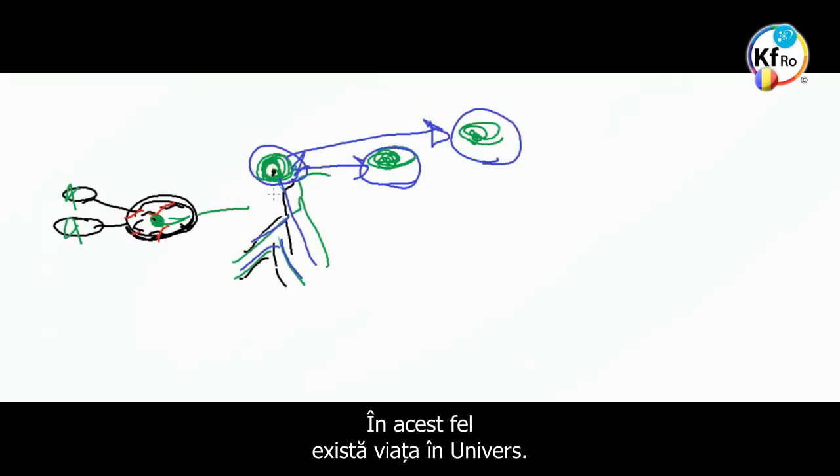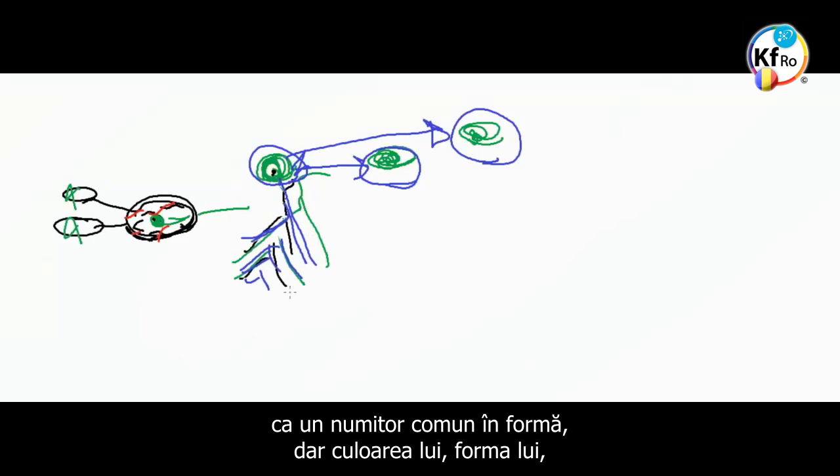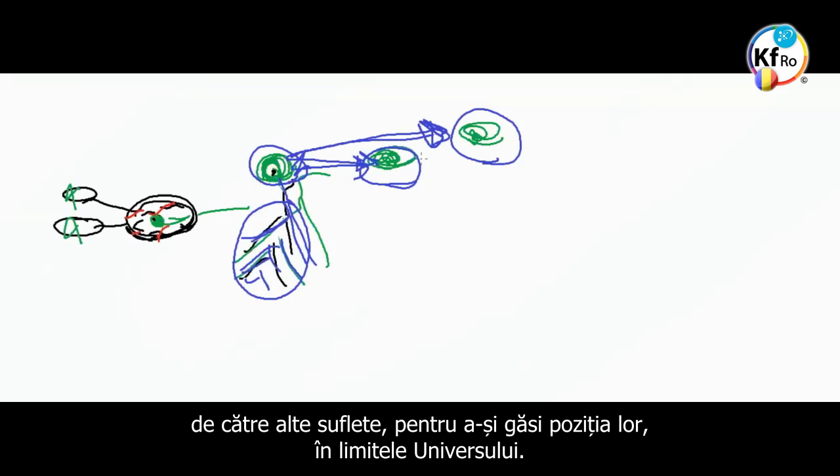This is how life exists in the universe. It's your soul which dictates the shape and the color of your eye, and your physicality as a common denominator in shape. But the color of it, the strength of it, is dictated how your soul has been preset by the other souls, to be that they find their position in their confinement of the universe.